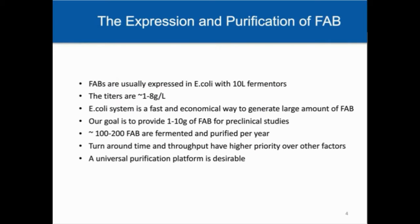At Genentech, FAB expression is done in E. coli using 10-liter bioreactors—a fast and economical way to generate large amounts. With high-density fermentation, titers range from 1 to 8 grams per liter. Our goal is to provide 1 to 10 grams of FAB for preclinical studies. We purify about 100 to 200 different FABs per year, so turnaround time and throughput have higher priority than maximum recovery, and a universal purification platform that handles both human and mouse FAB is highly desirable.